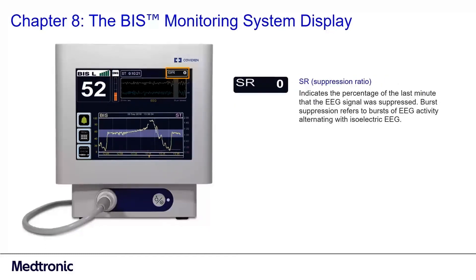The suppression ratio indicates the percentage of the last minute that the EEG signal was suppressed. Burst suppression refers to bursts of EEG activity alternating with isoelectric EEG, defined as complete loss of cortical activity with maximal amplification.